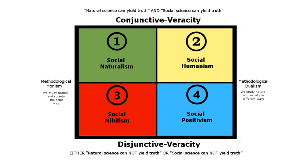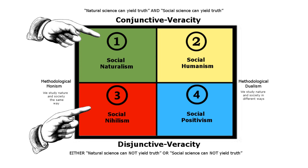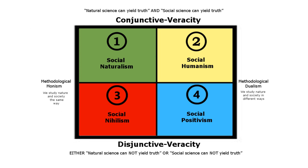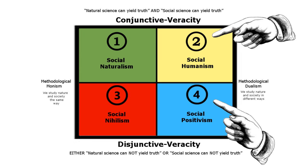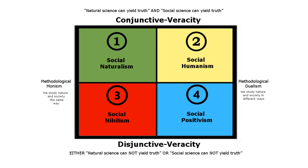By methodological monism I mean that we study nature and society in the same way, by means of an essentially continuous research method which applies to both, despite any superficial dissimilarity. Which is why the odd-numbered options on the left, social naturalism and social nihilism, unify the study of nature and society. Methodological dualism on the other hand means that we study nature and society in different ways — that there is a radical discontinuity between the research methods applied to the study of society and those applied to the study of nature. Which is why the even-numbered options on the right, social humanism and social positivism, bifurcate the study of nature and society.